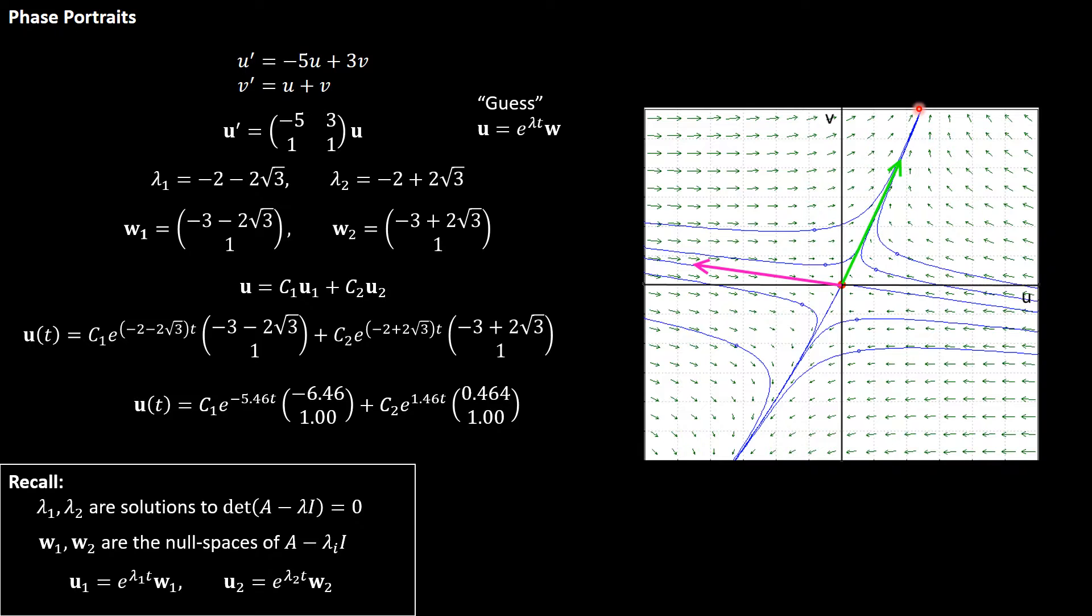Since the green vector is associated with the positive eigenvalue, solutions will depart along the direction of the green vector, whereas the solutions will approach the origin along the direction of the purple vector. As is always the case when we have a positive eigenvalue lambda 2 and a negative eigenvalue lambda 1, which in this case were 1.46 and negative 5.46, when we have a positive and a negative eigenvalue we always have a saddle point where we have these solutions that look like hyperbolas approaching two asymptotes that are parallel to our eigenvectors.